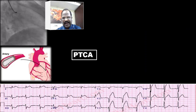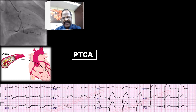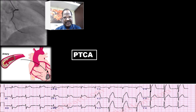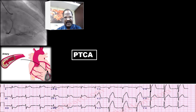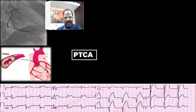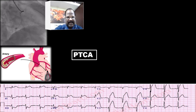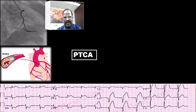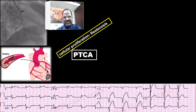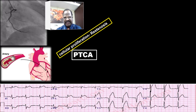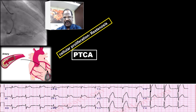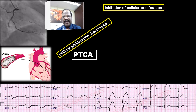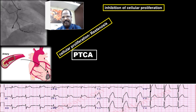One extra point: in percutaneous transluminal coronary angioplasty (PTCA), we introduce a balloon catheter for recanalization. But introducing a balloon may damage the endothelium, causing proliferation and risk of re-stenosis. So whenever we do angioplasty, we now place a stent. To prevent re-stenosis, we use drug-eluting stents — stents with drugs added to prevent re-stenosis.